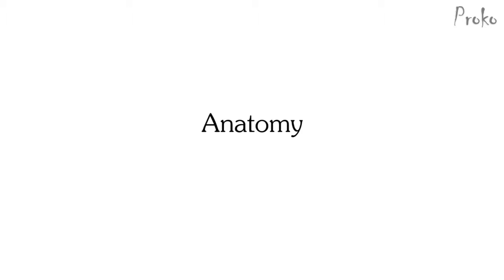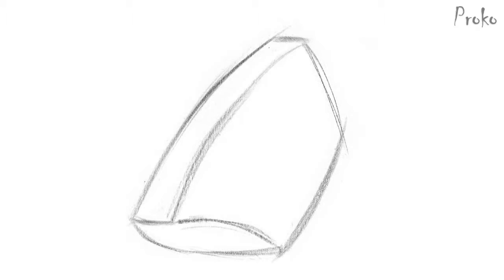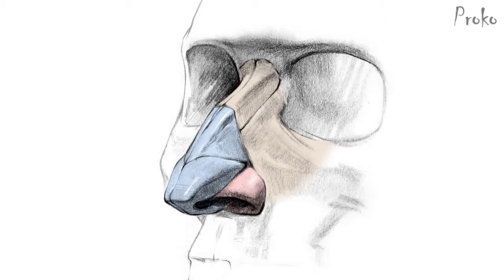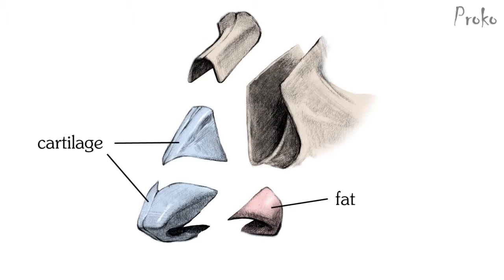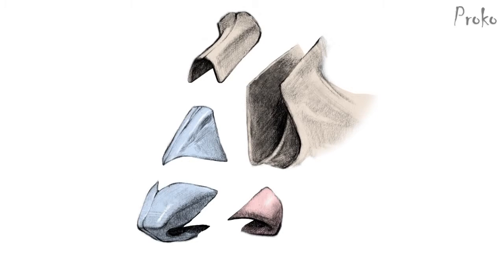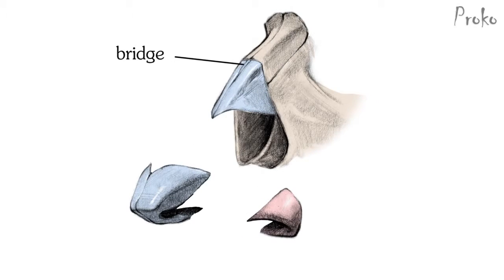The anatomy. Once you establish the perspective of the nose, it's time to add some details. But if you don't understand the anatomy, it's hard to know what details to put in. Understanding the anatomy helps you to design your shapes to indicate the subtleties of the nose. The nose is made up of interlocking pieces of cartilage and fat attached to the bone of the skull. Let's group these pieces into three groups: the bridge, the ball, and the wings.